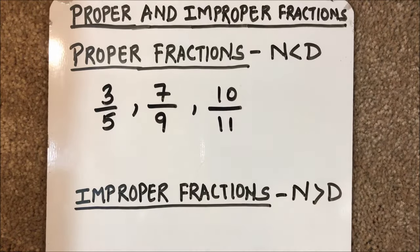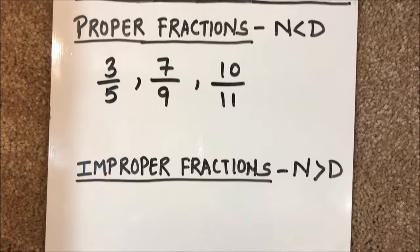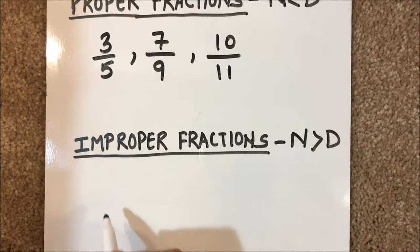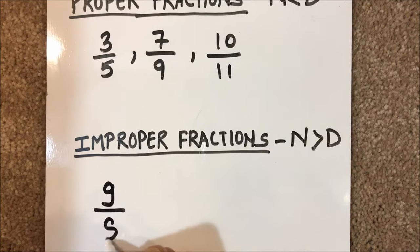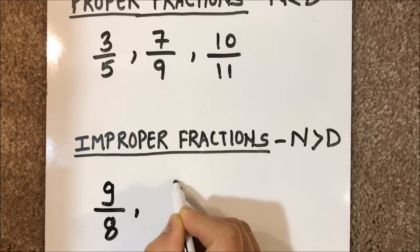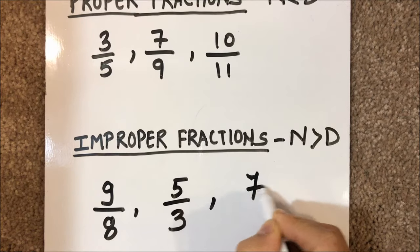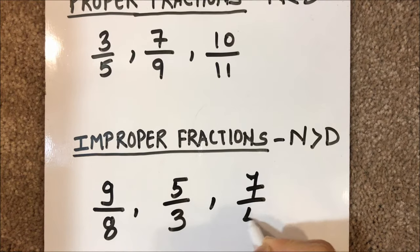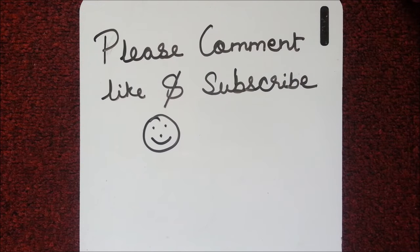Improper fractions are fractions in which the numerator is greater than the denominator. For example, 9 over 8, 5 over 3, and 7 over 4 are examples of improper fractions. Thanks for watching.